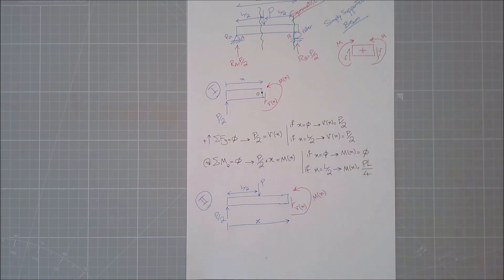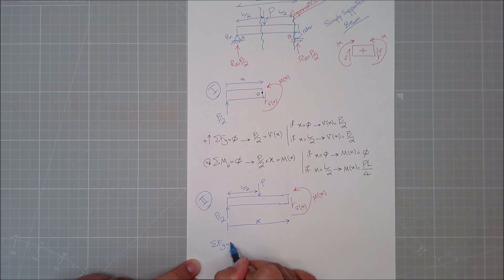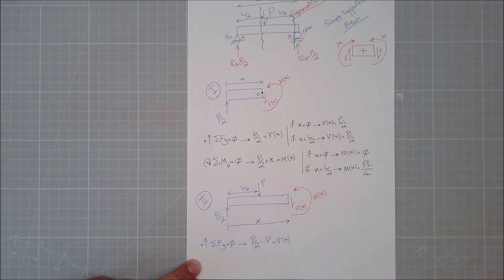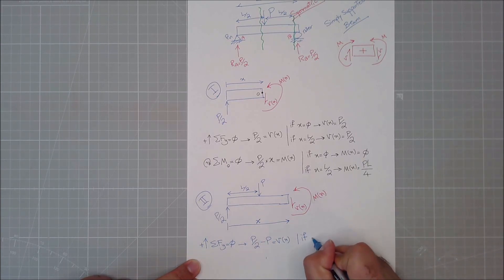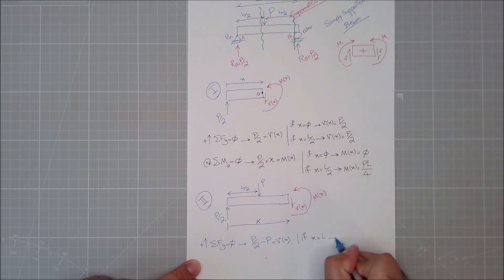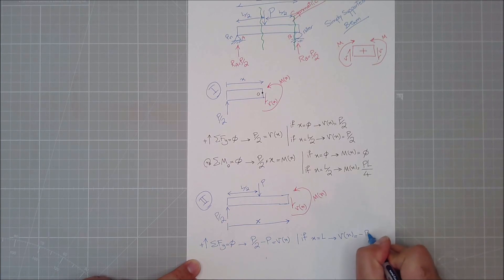Writing equilibrium for the second segment: summation of forces in y equals zero, taking upward positive: P/2 - P - V(x) = 0, so V(x) = -P/2. I already know the shear at x = l/2 from the first segment is P/2. Substituting x = l gives V(l) = -P/2, confirming a negative shear in the right half of the beam.